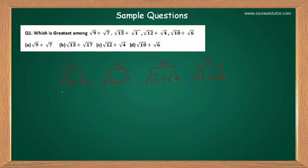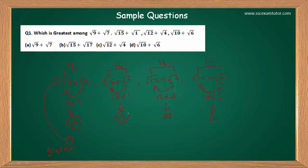Since the condition is satisfied, we can apply the trick. Simply multiply the two numbers under each root: 9×7, 15×1, 12×4, and 10×6. You will get 63, 15, 48, and 60. The root of the greatest product will be the greatest, and the root of the smallest product will be the smallest.